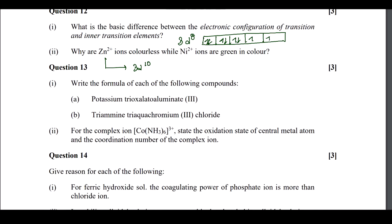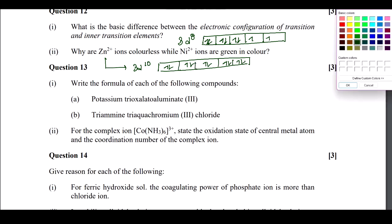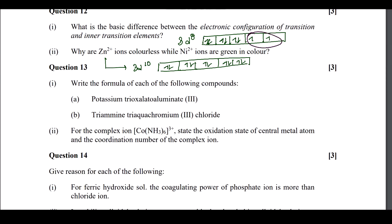For zinc 2 plus, we have electronic configuration 3d10. For nickel 2 plus, electronic configuration is 3d8. In d orbital, the number of electrons possible is 10. In case of 3d10, all the d orbitals are fulfilled, meaning there are no unpaired electrons: 1, 2, 3, 4, 5 pairs, no unpaired electrons. But in case of nickel, unpaired electrons are present - 2 unpaired electrons are present. That's why this one will be paramagnetic in nature.